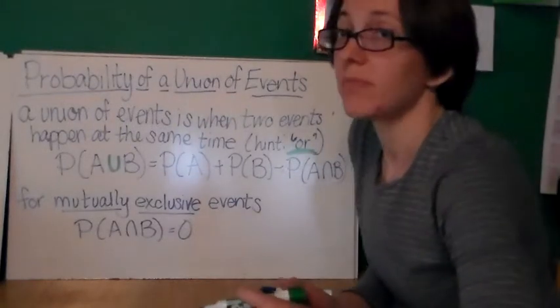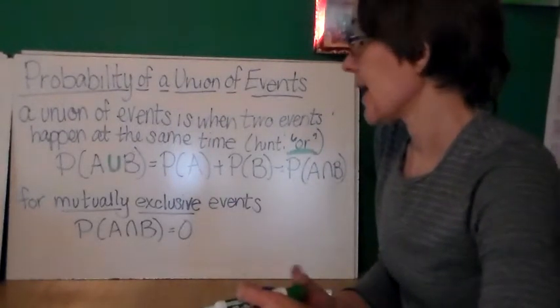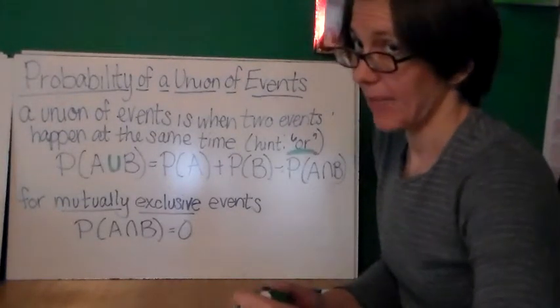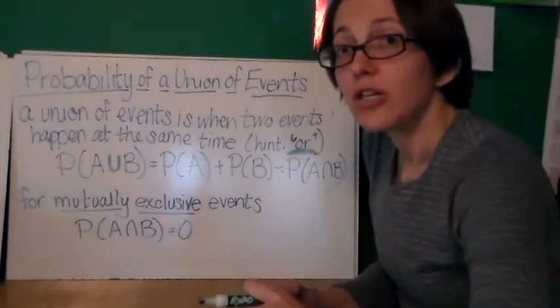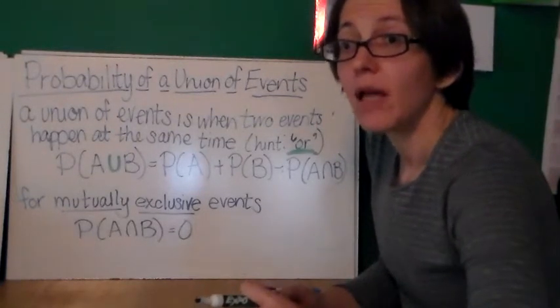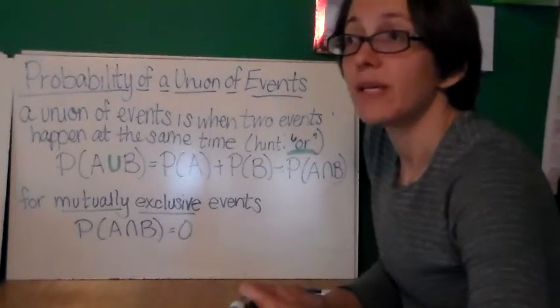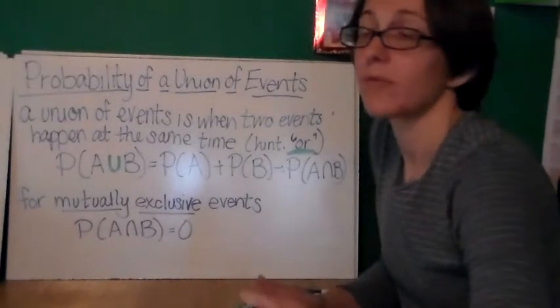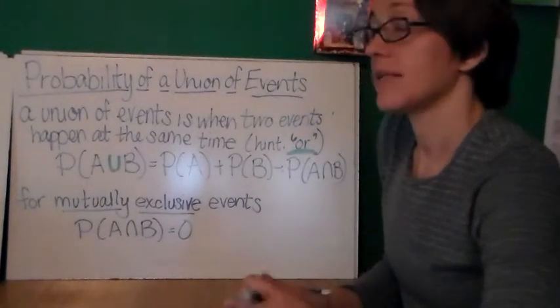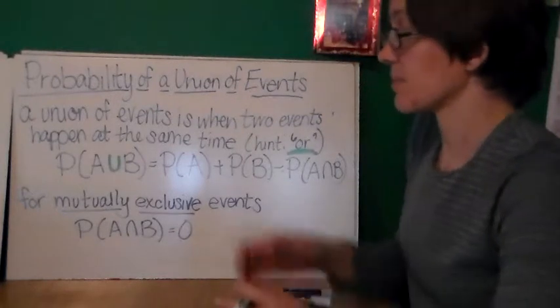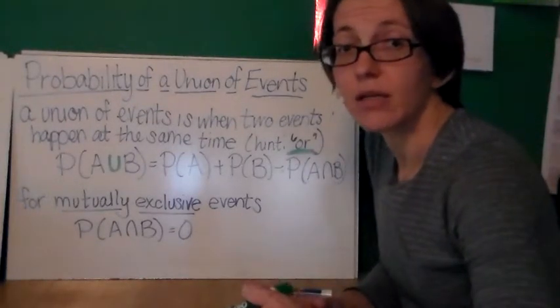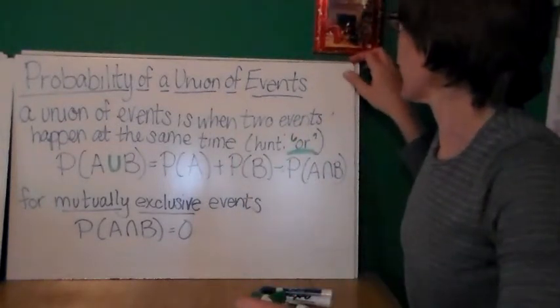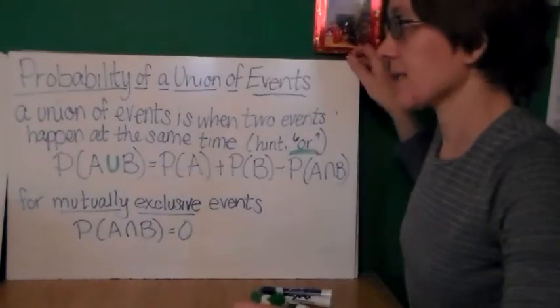Okay? Now, some events are called mutually exclusive. And for these, the probability of A and B happening at the same time would be 0. To return to our deck of cards example, a card could never be both a spade and a heart if we exclude jokers from the pack. But a card is never going to be both a spade and a heart, so its probability of the intersection would be 0.